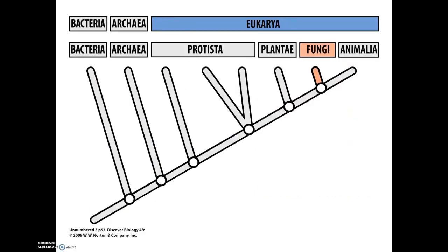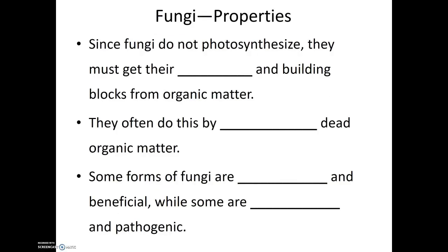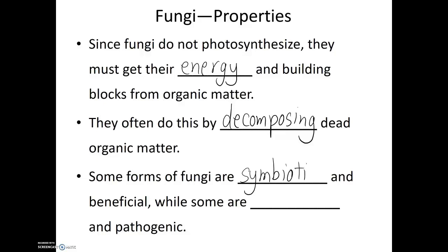The location of fungi within Domain Eukarya is between Plantae and Animalia, and it makes sense because they have some properties similar to plants but also some properties similar to animals. Since fungi do not photosynthesize, they must get their energy and building blocks from organic matter, often by decomposing dead organic matter. Some fungi are symbiotic and beneficial — this is often seen with the roots of many plants and trees, where fungi can help absorb nutrients and moisture from the surrounding soil.